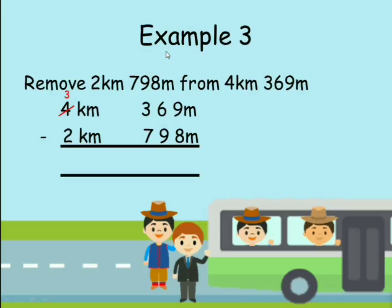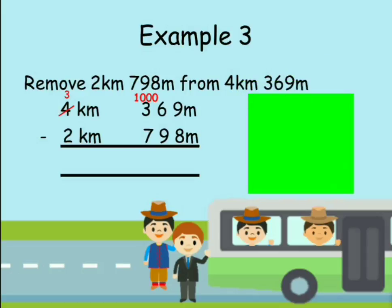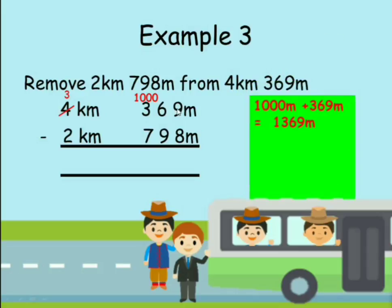If you bring that one kilometer to the meters place it will be 1,000 meters, because one kilometer equals one thousand meters. So you add 1,000 meters plus 369 meters, which gives 1,369 meters. Then you remove 798 meters from 1,369 meters.